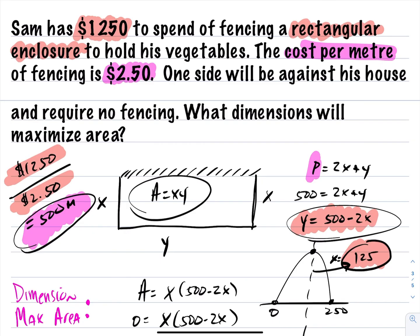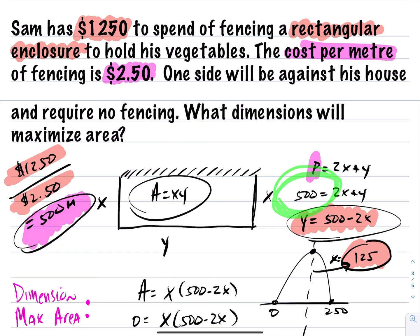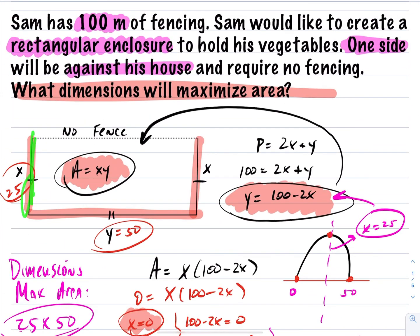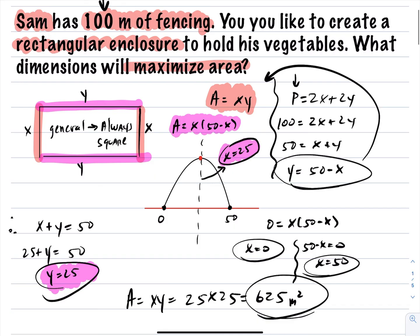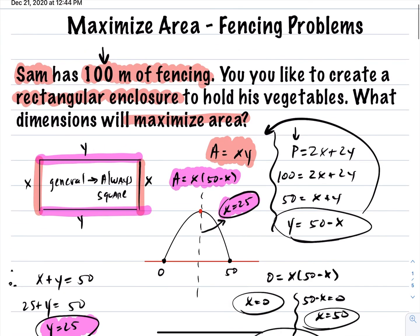This concludes the lesson on using quadratic equations to maximize area for rectangular enclosures. There are three types of questions: you can be given money and cost per meter to deduce the total fencing; you can have a three-sided structure where one side needs no fencing; and if you have a four-sided enclosure, it always maximizes as a square — just divide the total perimeter by four. Two other types of word problems — motion of objects and revenue and profit — will be linked at the end of the video.